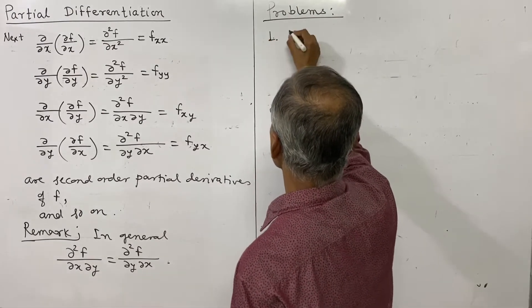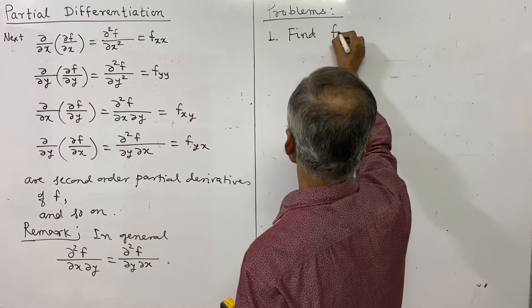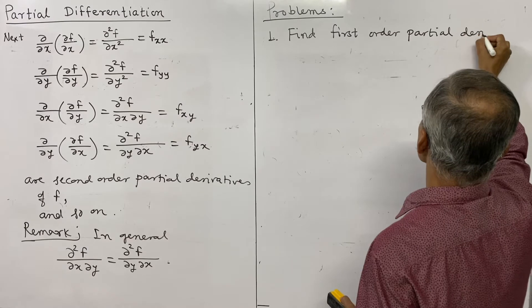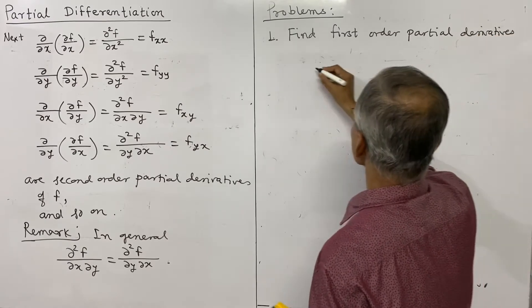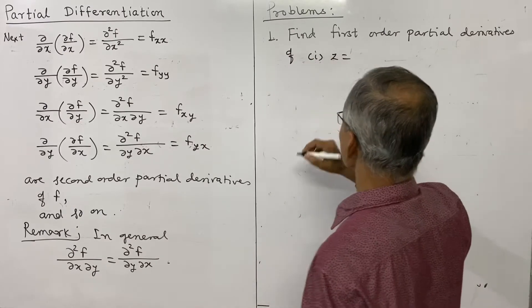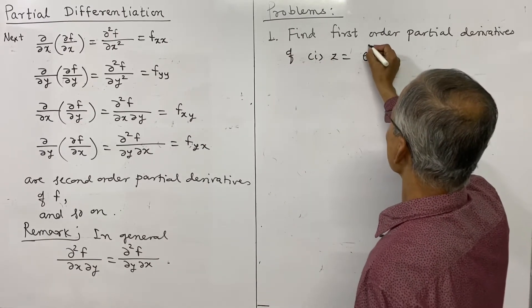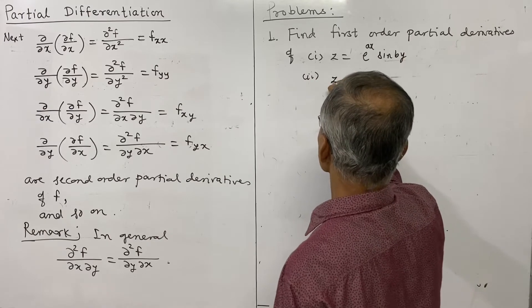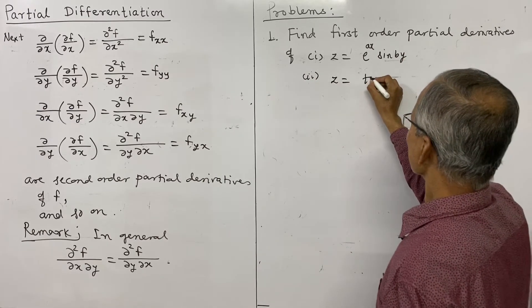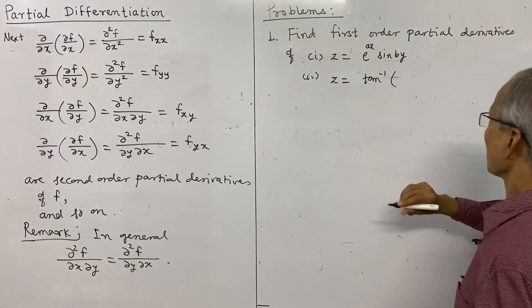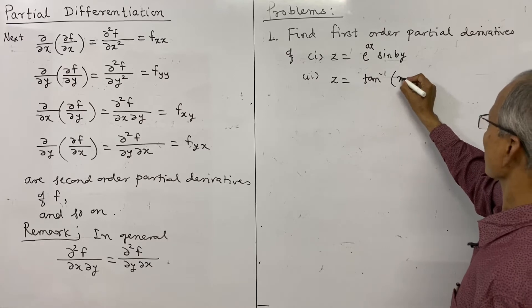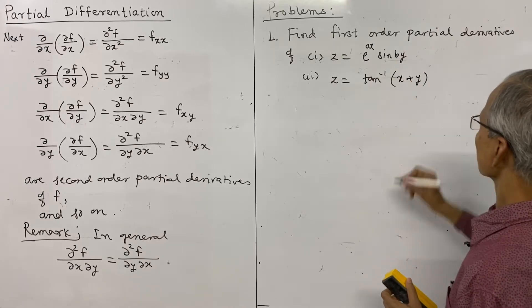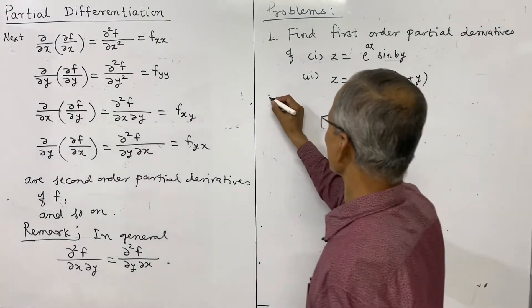Now some problems. First, find the first order partial derivatives of: (1) z = e^(ax) · sin(by), and (2) z = tan⁻¹(x + y).